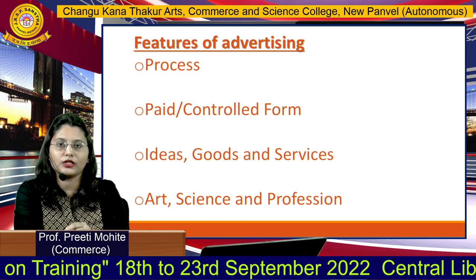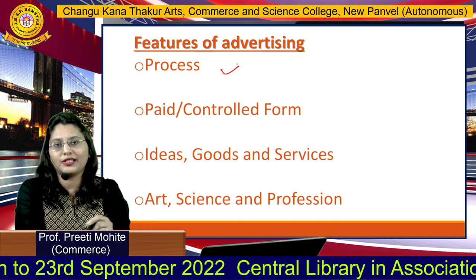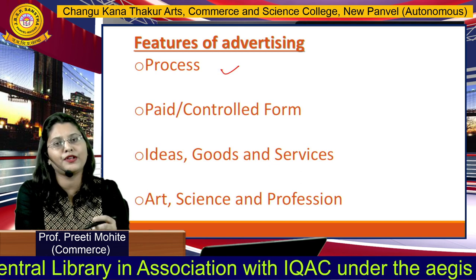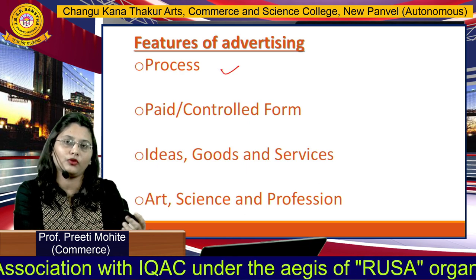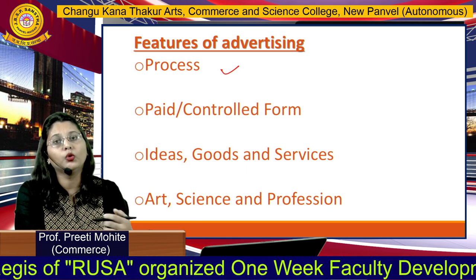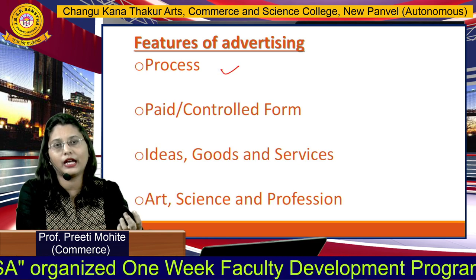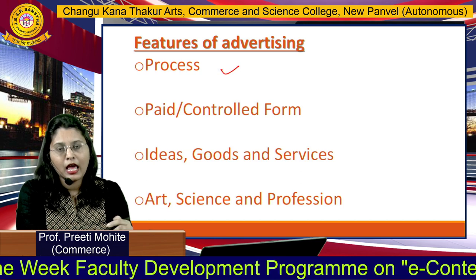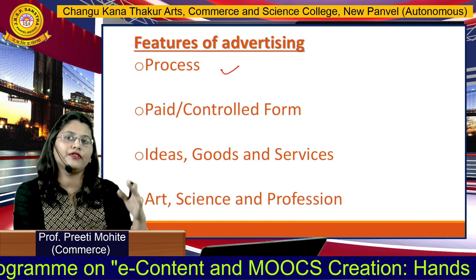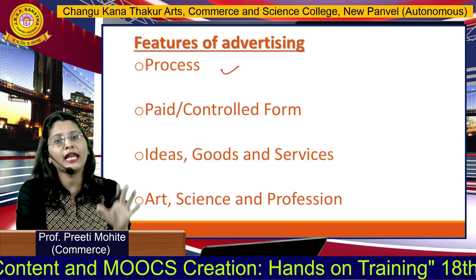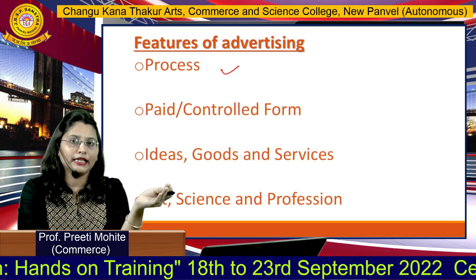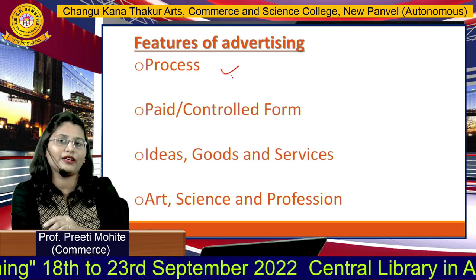We will begin with the features of advertising. The first one is process. This is a systematic process in advertising — we have to prepare the things, plan for the advertising, and place those advertisements. In planning, we decide how to prepare the ad, to whom, and when to advertise. In preparing, we create the advertisement in a creative manner. And when placing, we place it in media such as newspaper, television, internet, and so on.